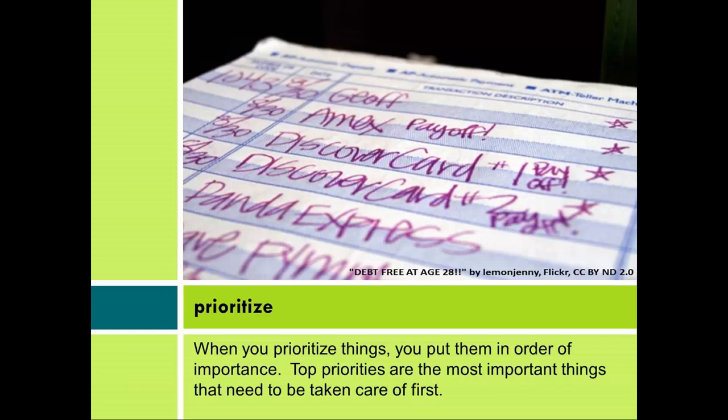Prioritize: When you prioritize things, you put them in order of importance. Top priorities are the most important things that need to be taken care of first.